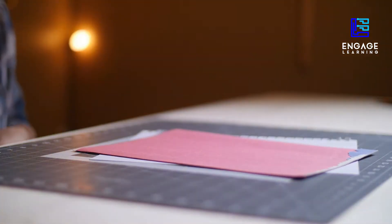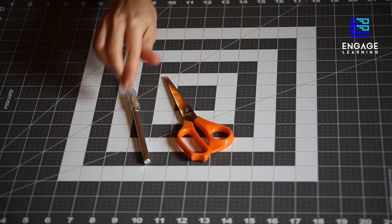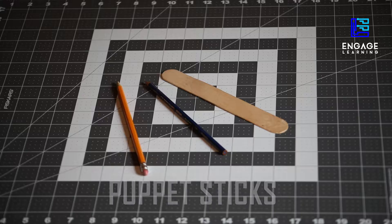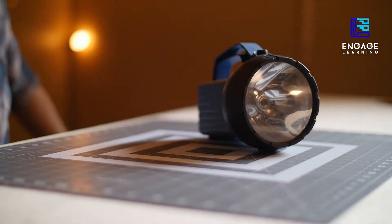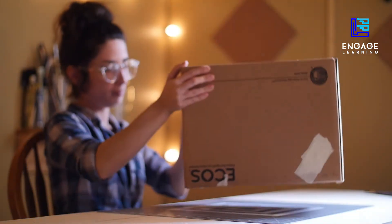You'll need construction paper, parchment paper, scissors or an exacto knife, a light source, flashlight or lamp, and a cardboard box.